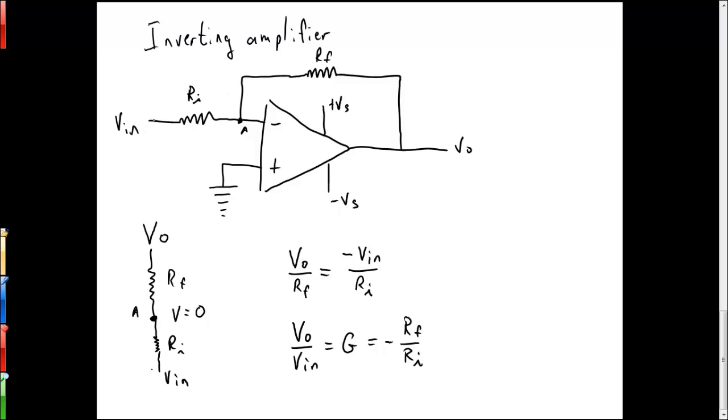That means that there's going to be some positive flow of current through RI in that direction. Because there's no current flowing into the negative terminal of the op amp, that means that all of this current has to go through RF and eventually to the node here where the voltage out is.